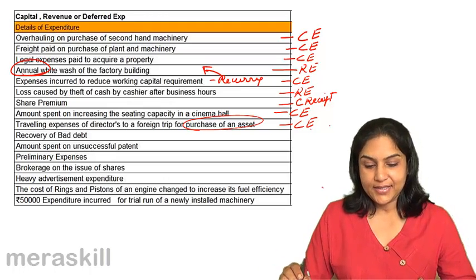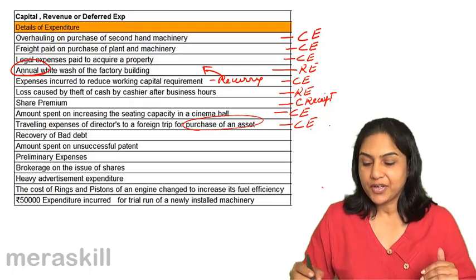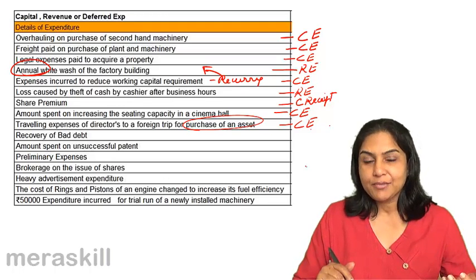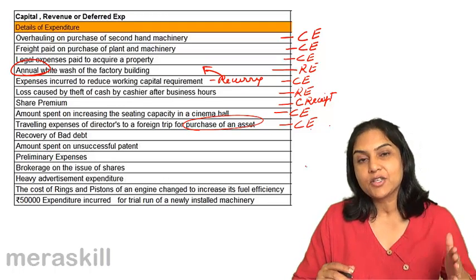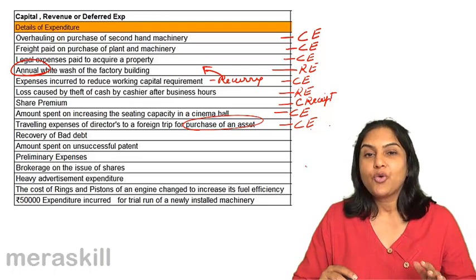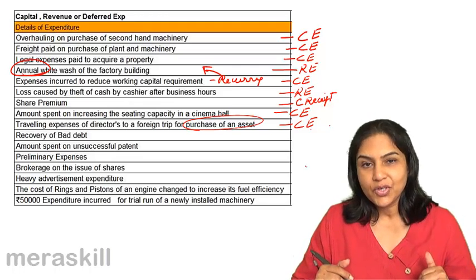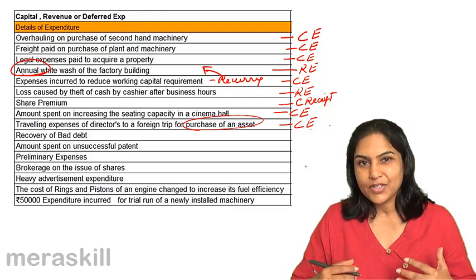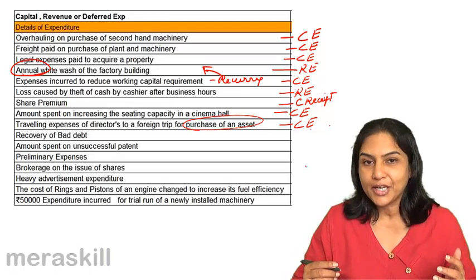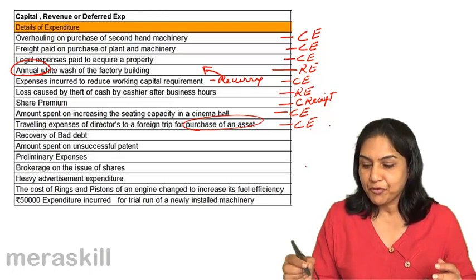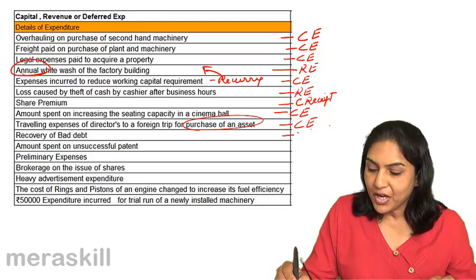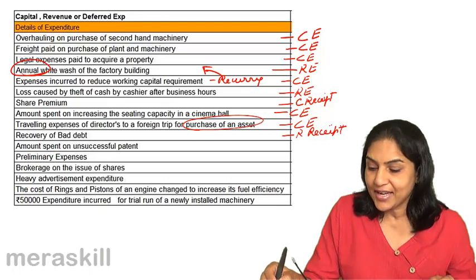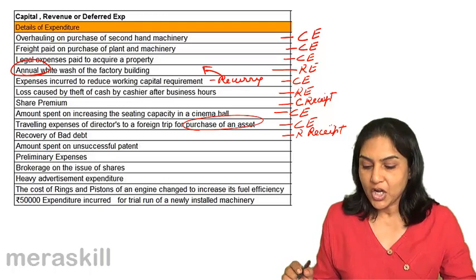Recovery of bad debt. Bad debts recovered — this is a receipt, not really an expenditure. Bad debts were written off as an expense previously. Now we have recovered this amount. This is normally treated as a revenue income. The business does not have a liability to anybody else. Recovery of a bad debt should be a revenue receipt — we treat it as income and take it to the credit side of the profit and loss account.